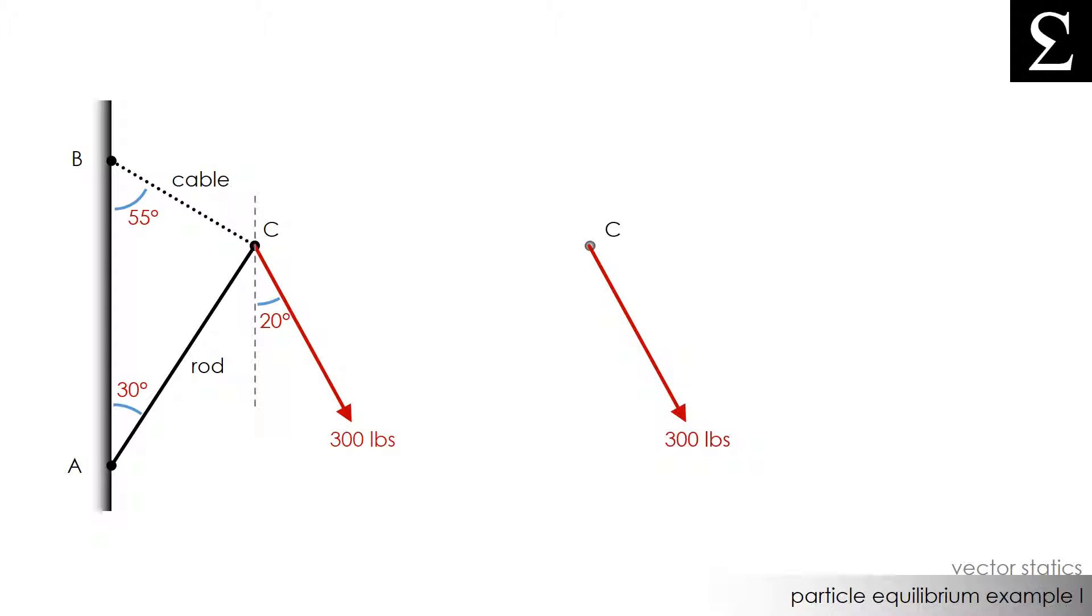The first thing we know is that there is a force of 300 pounds being applied to this point. The angle that the 300 pound force makes with the vertical is 20 degrees.